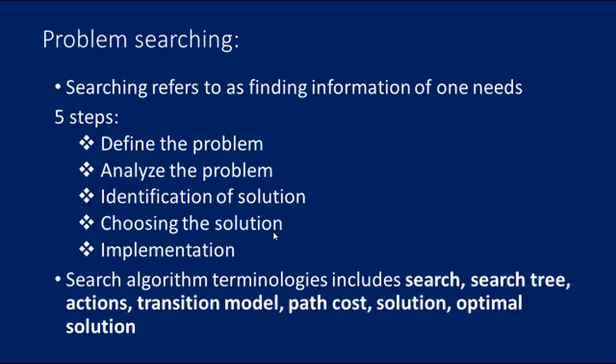Hello everybody. Now we are going to see the next topic: Problem Searching. We have seen many problems, and there is a need to search for a solution to solve them. In this section we understand how searching can be used by the agent to solve a problem. For solving different kinds of problems, an agent makes use of different strategies to reach the goal by searching the best possible algorithms. This process of searching is known as a search strategy.